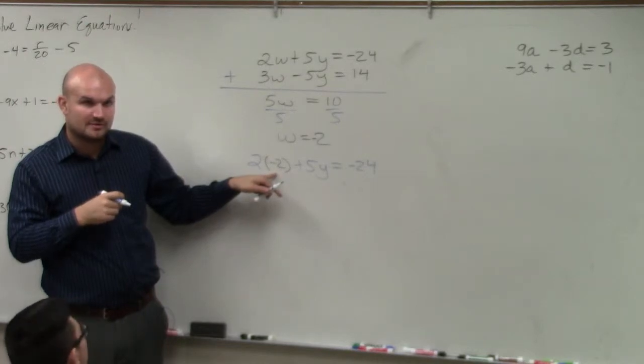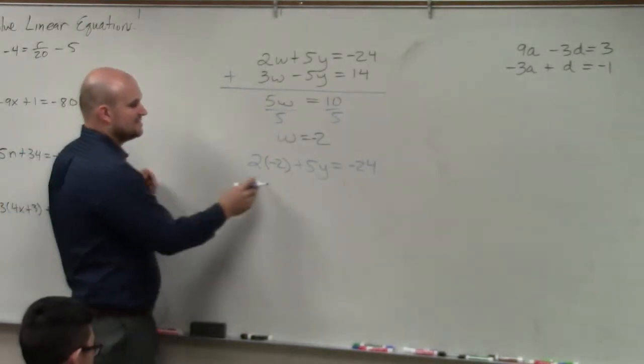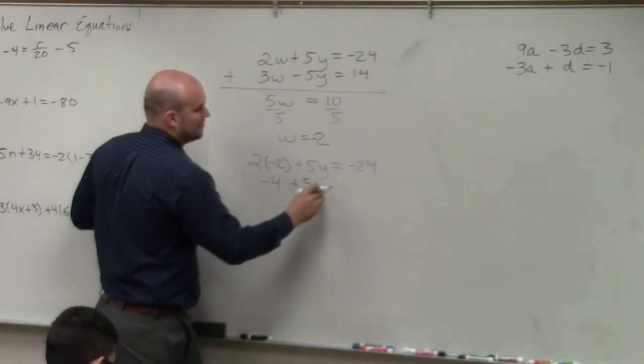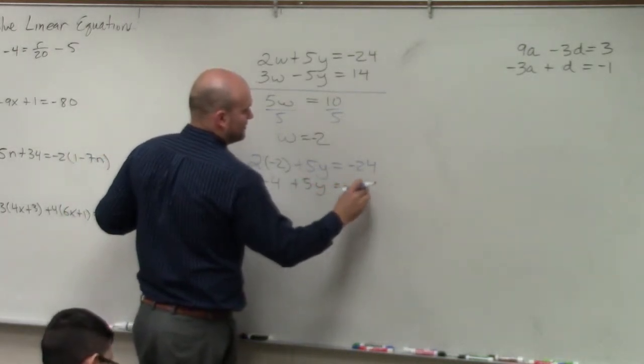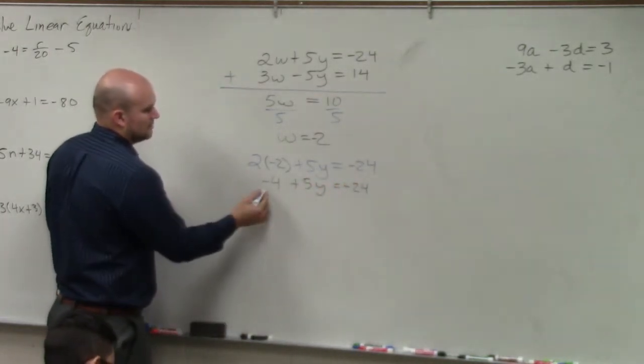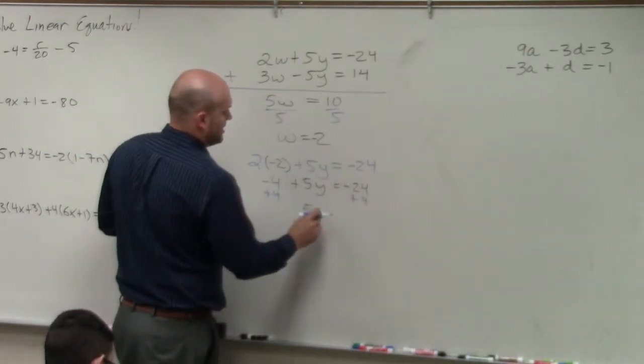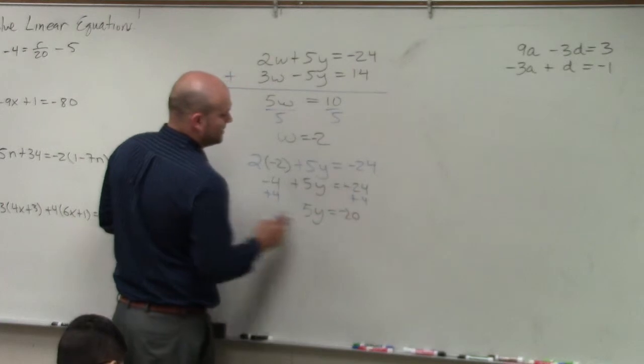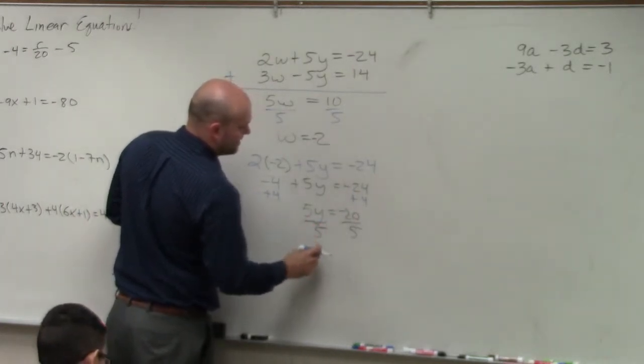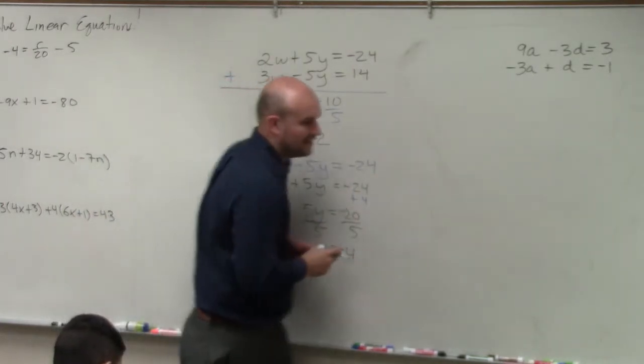Now, 2 times negative 2 is negative 4 plus 5y equals negative 24. Add 4, add 4. I have 5y equals negative 20. Divide by 5, divide by 5. y equals negative 4.